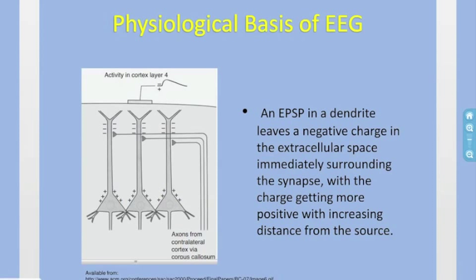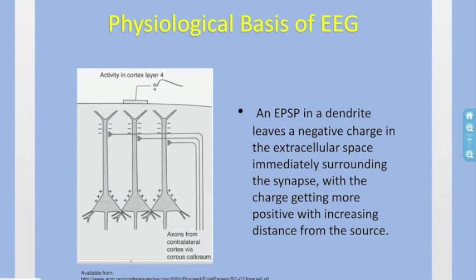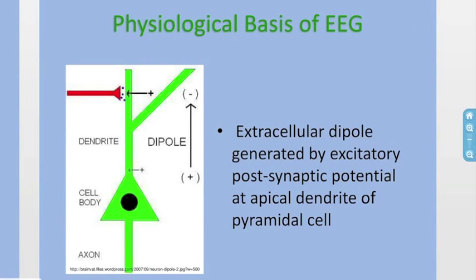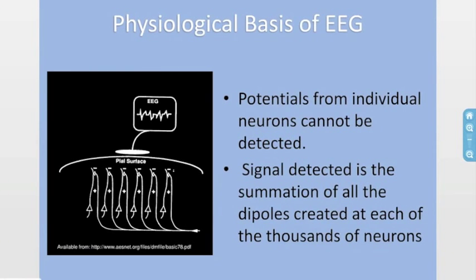This leaves a relatively negative charge in the extracellular space immediately surrounding the synapse. A dipole is therefore created with separation of charge vertically orientated in the cortex. Every neuron receiving synaptic inputs can therefore be thought of as a dipole with a specific orientation and polarity. Signals cannot be detected from single neurons as the potentials are of very small magnitude and are a considerable distance from the cell to the scalp surface. The signal detected is in fact the summation of all the dipoles created at each of the thousands of neurons.